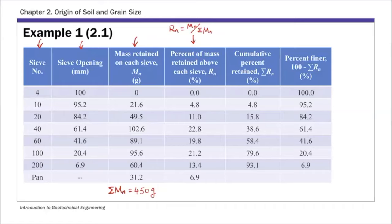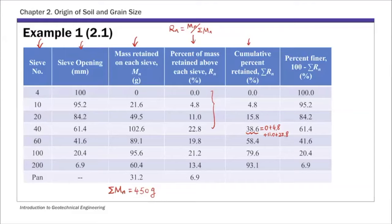The next column is the cumulative percent retained. For example, the value 38.6 is calculated by summing all the rn values above it: zero plus 4.8 plus 11.0 plus 22.8. So you sum all the percentages above that sieve to get the cumulative percent retained.